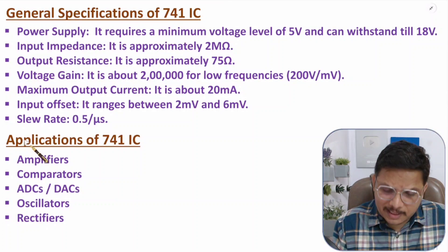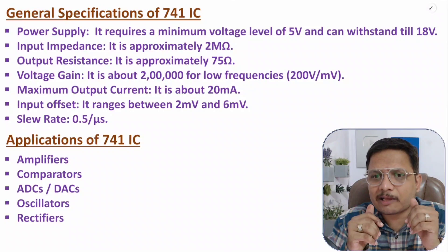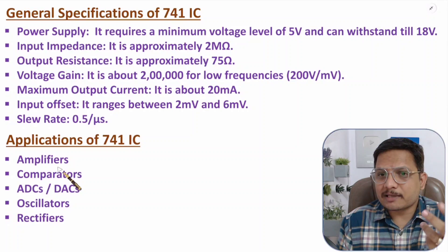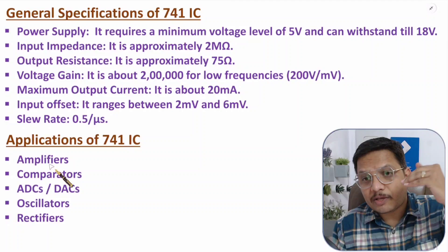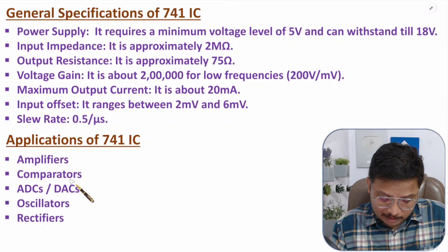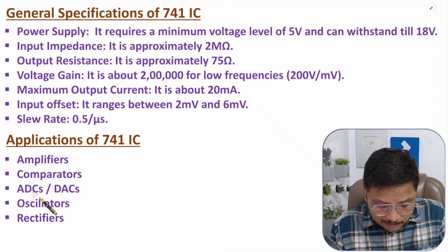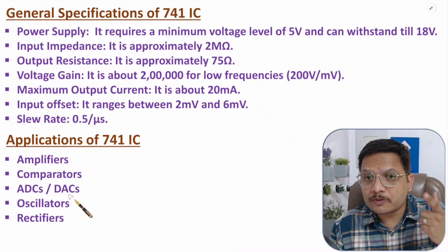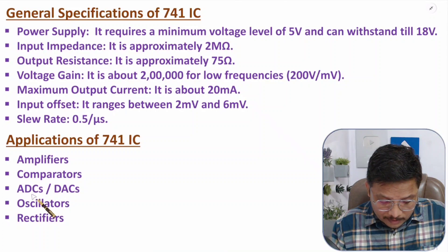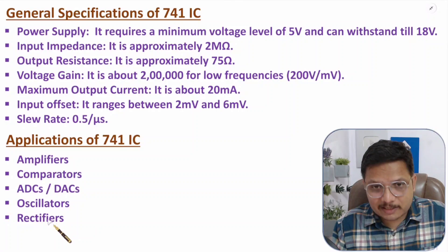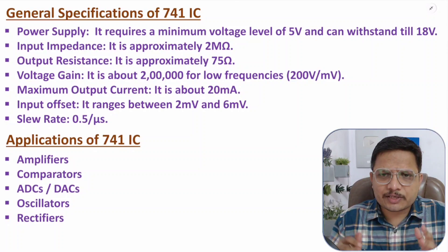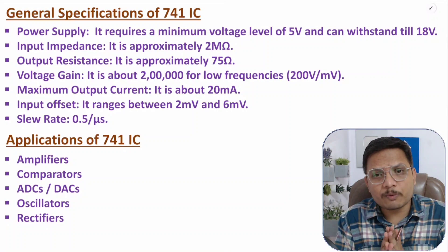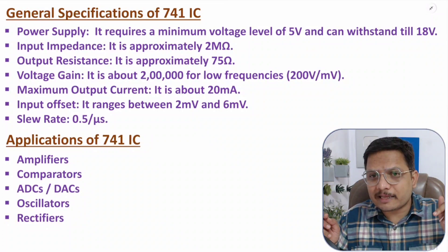There are many applications of 741 IC covered in this analog electronics playlist. It can be used as an amplifier — by default it is a differential amplifier. With it, we can build a comparator, use it in analog-to-digital conversion (ADC) and digital-to-analog conversion (DAC), oscillators, and rectifiers. Thank you for watching. If you have any queries, post them in the comment section.